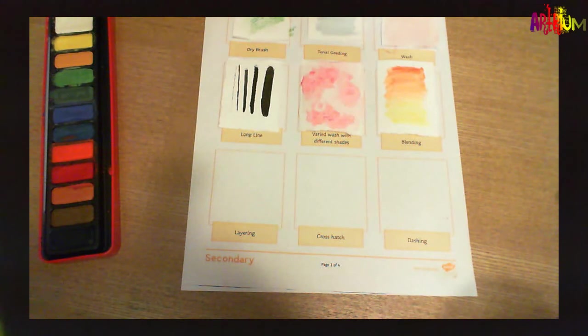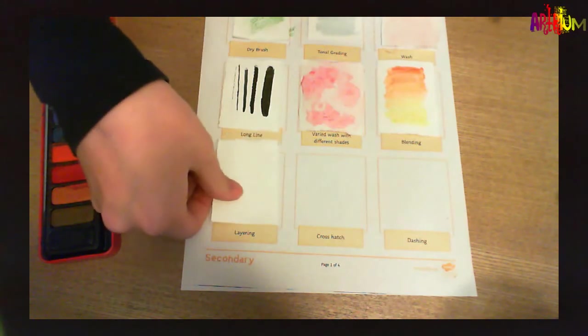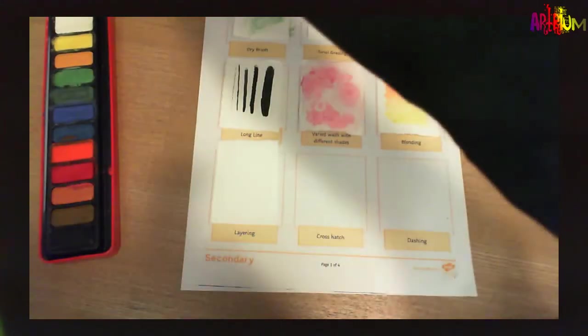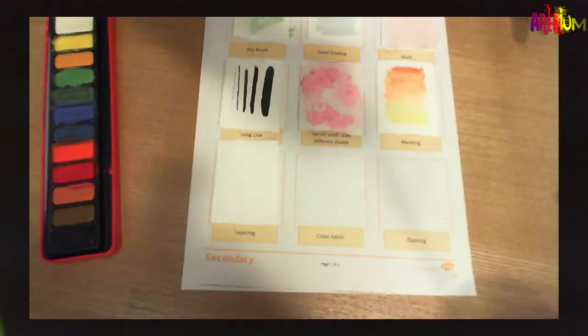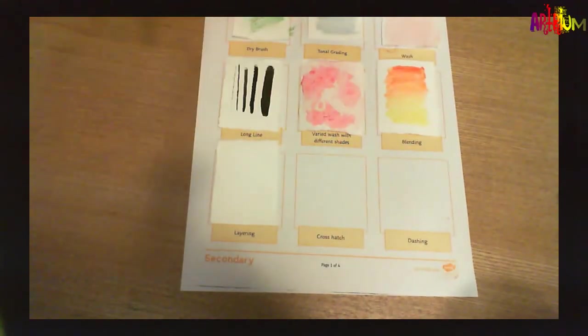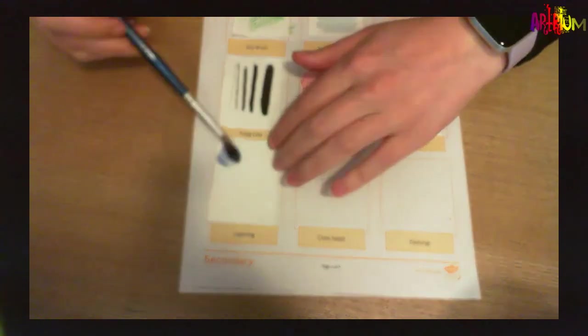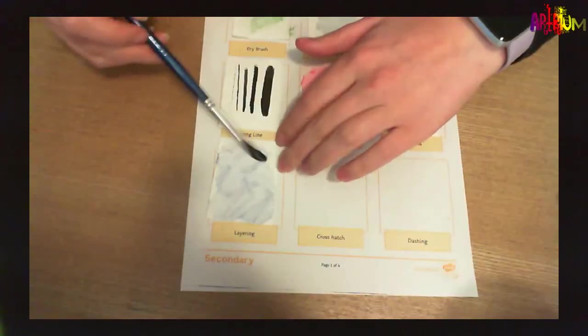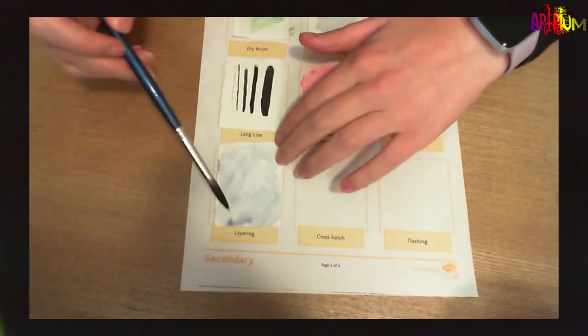So I'm going to add my first layer, just similar to the wash. What colour should we go for this time? We'll go for a dark blue. Put the thin layer of that blue there. And I'm going to let that dry while we work on the crosshatch technique.